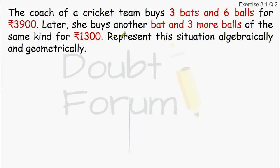This question states that the coach of a cricket team buys 3 bats and 6 balls. In the first case, the coach of a team is buying 3 bats and 6 balls for Rs. 3900.